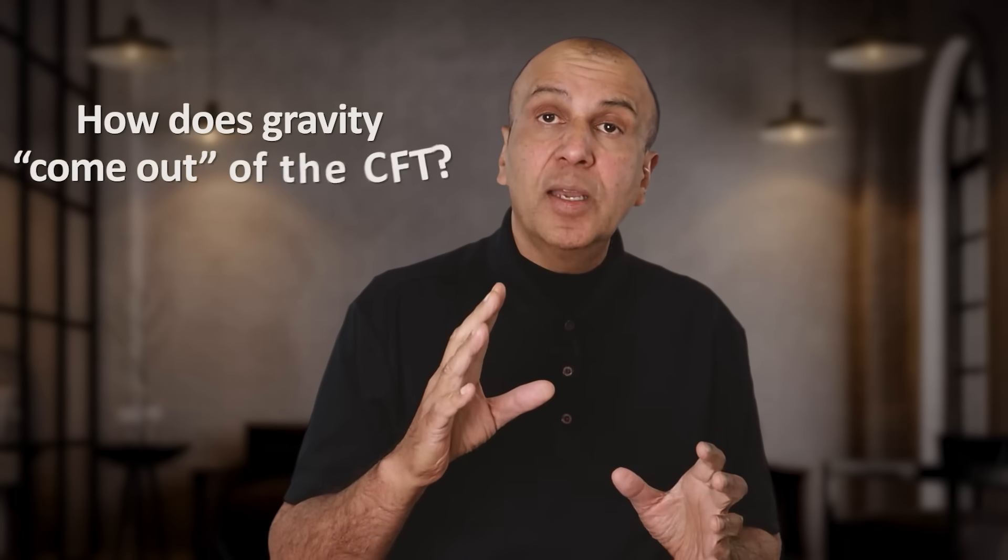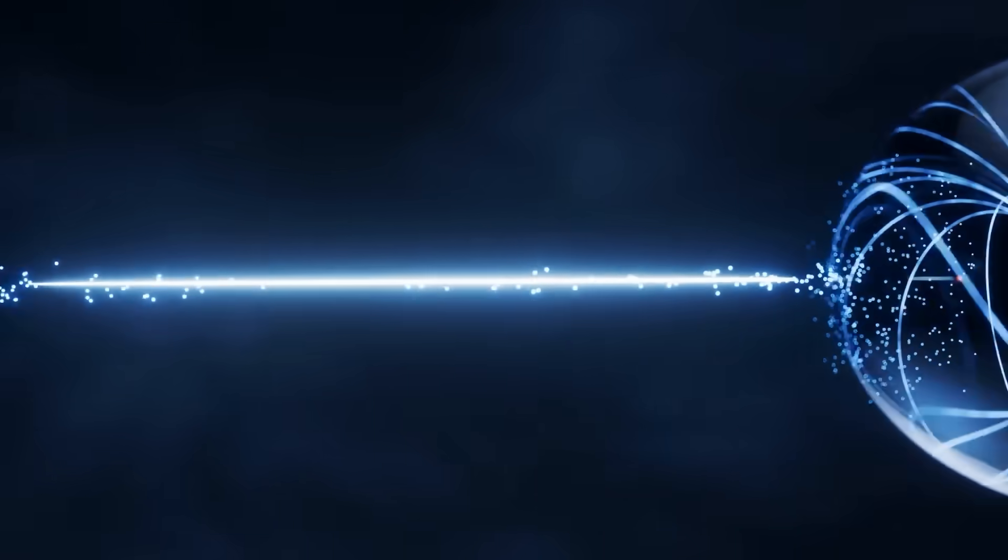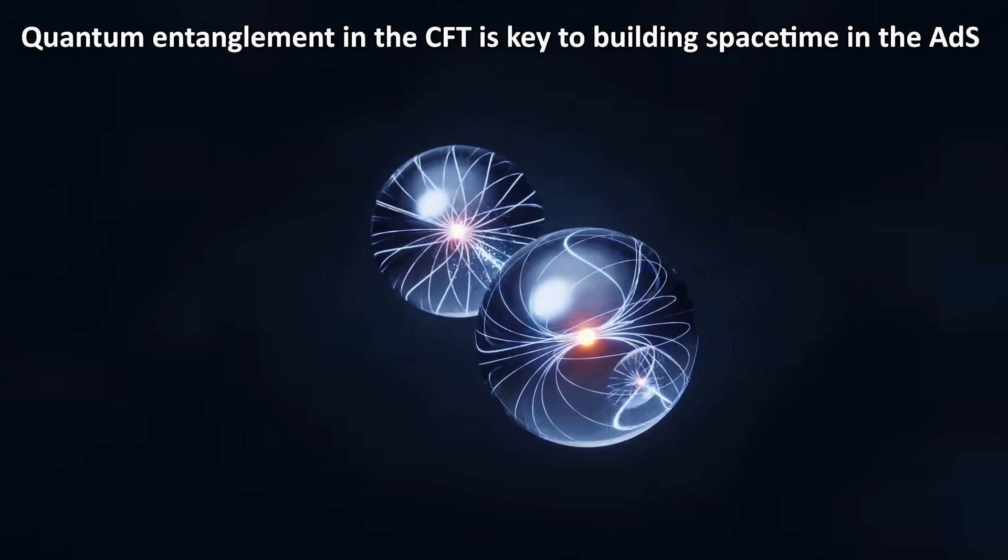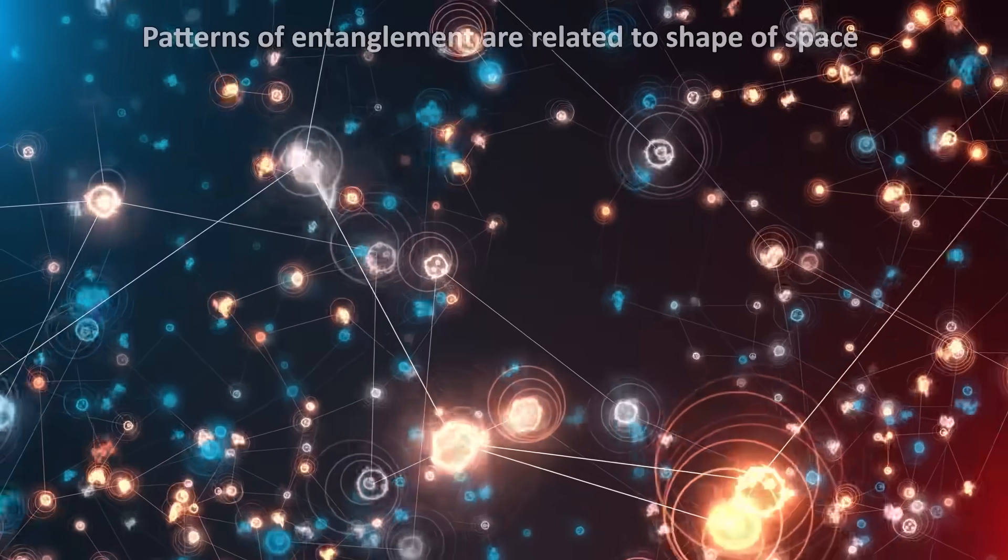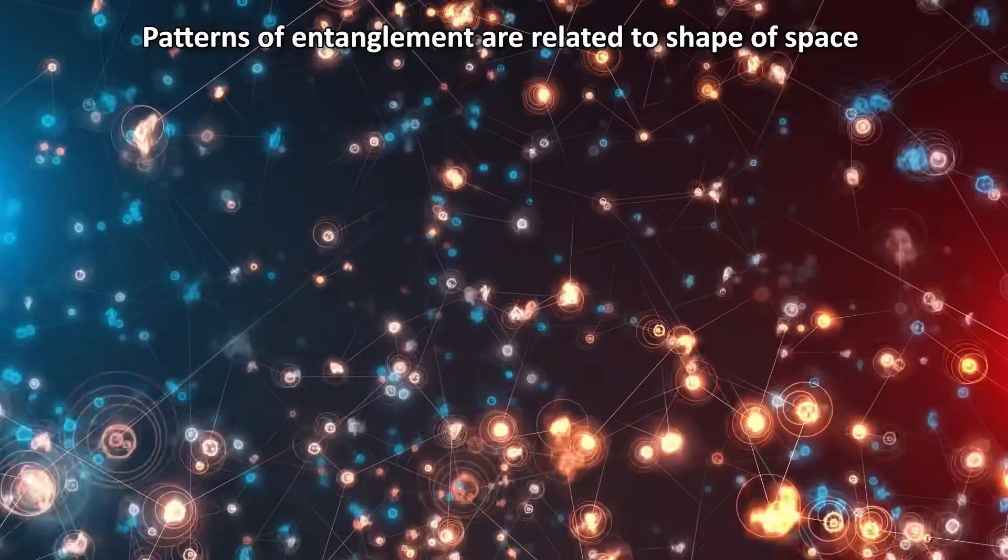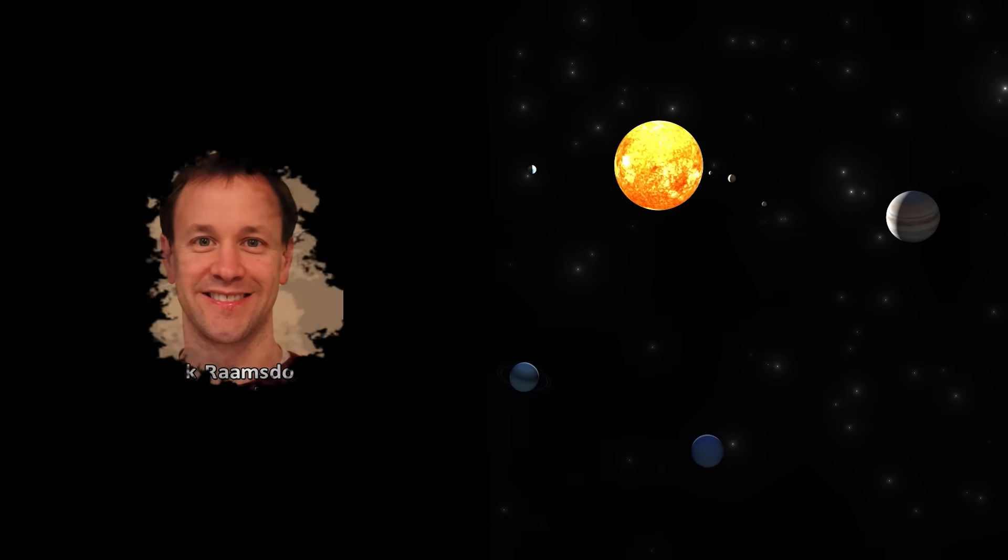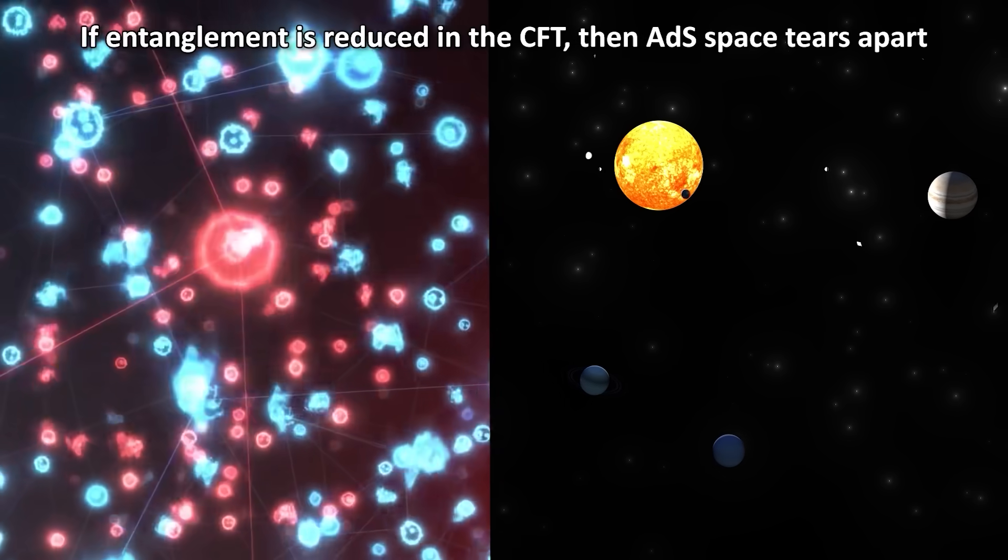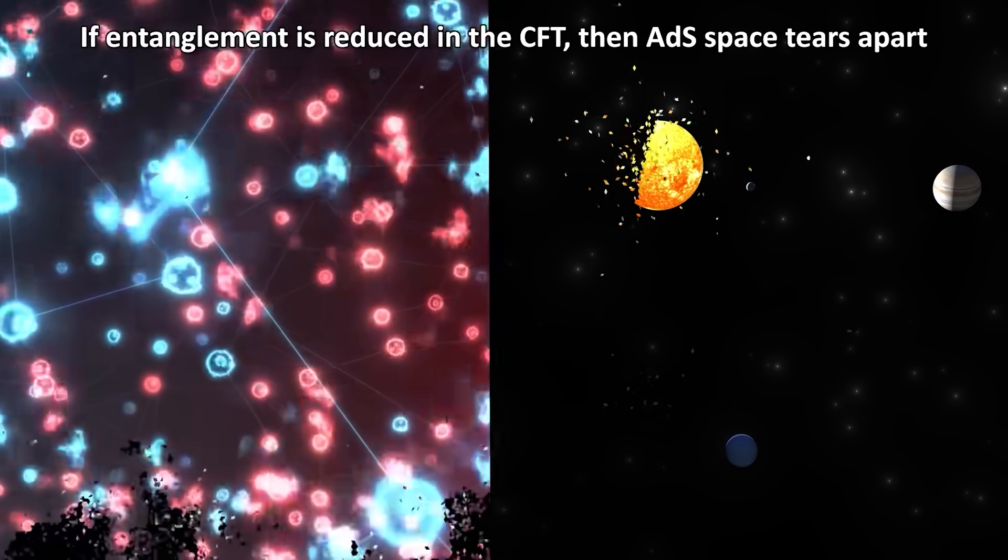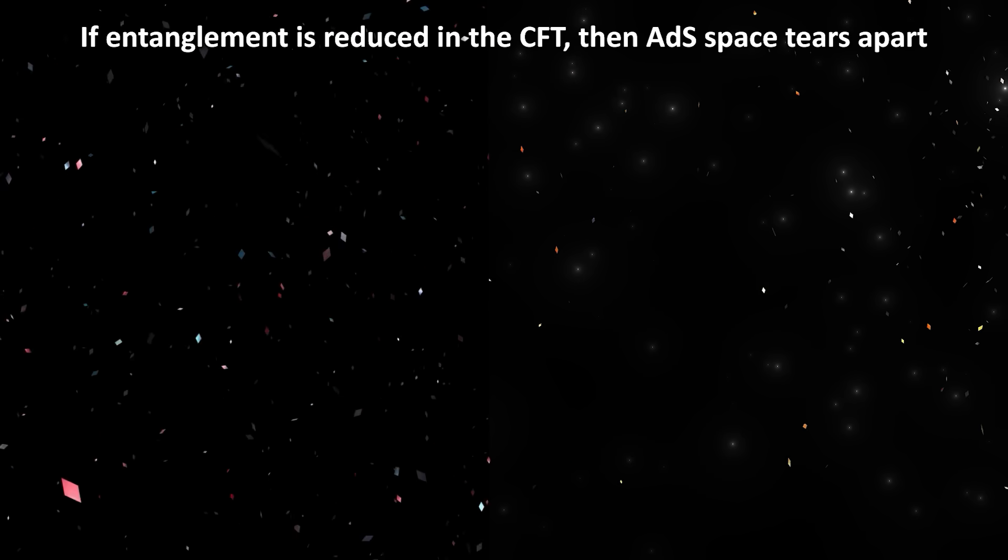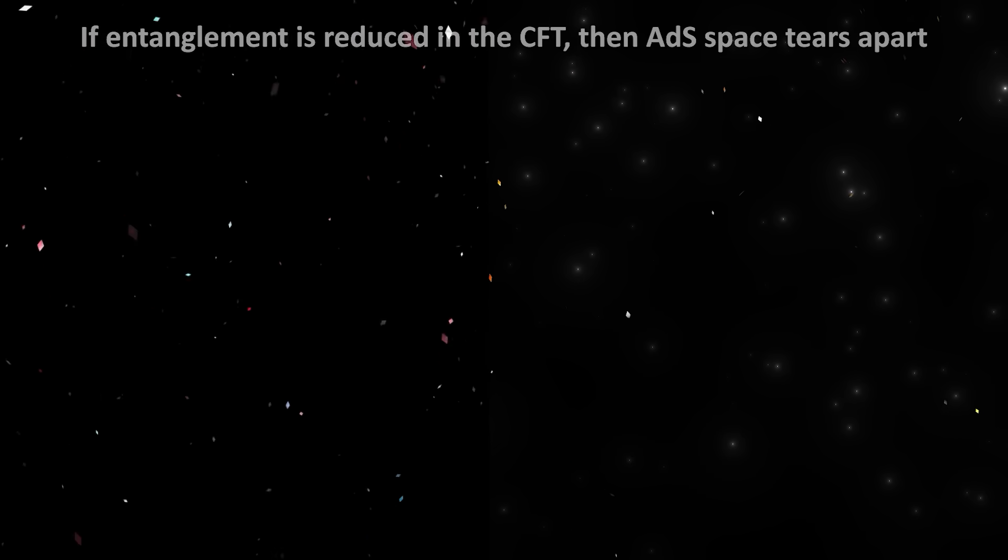But how exactly does gravity come out of the CFT? Modern research appears to show that quantum entanglement in the CFT is the key to building the space-time geometry in the ADS. It turns out that these patterns of entanglement can be related to the connectivity and shape of space in the bulk. In a famous thought experiment, physicist Mark Van Raamsdonk argued that if you gradually reduce the entanglement between parts of the CFT, the corresponding ADS space begins to split or tear apart, implying that entanglement is like the glue that holds space together.